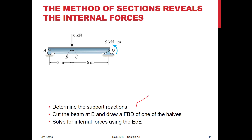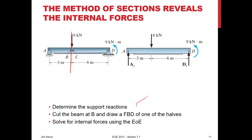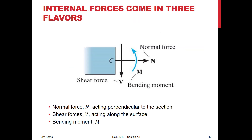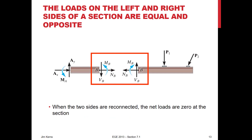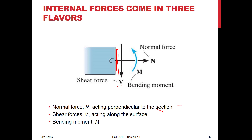As I mentioned before, we have names for these internal forces. The normal force N acts along the length of the beam - it is normal to the section. Shear forces act along the surface. And the bending moment is the reaction couple necessary to keep that section in equilibrium. When I cut these, the loads on the left and right have to be equal and opposite.